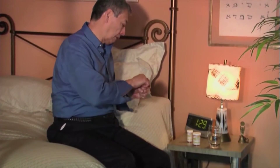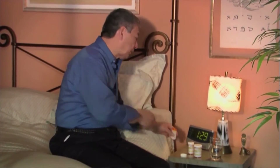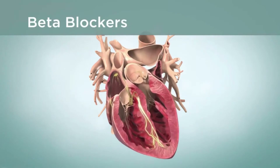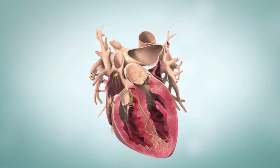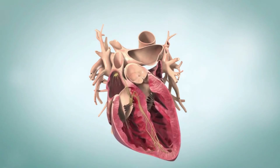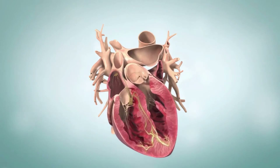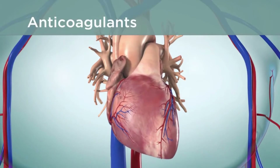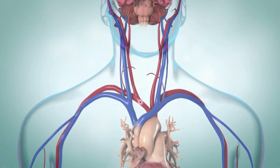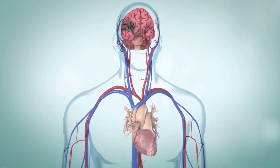Atrial flutter can be controlled with medicine. Your healthcare provider may prescribe beta blockers or calcium channel blockers, which work to slow the electrical activity that passes through the AV node — the electrical connection between the upper and lower chambers of the heart. Anticoagulants may also be prescribed to help prevent a blood clot from forming in the heart, as blood clots can break loose and travel to the brain, causing a stroke.